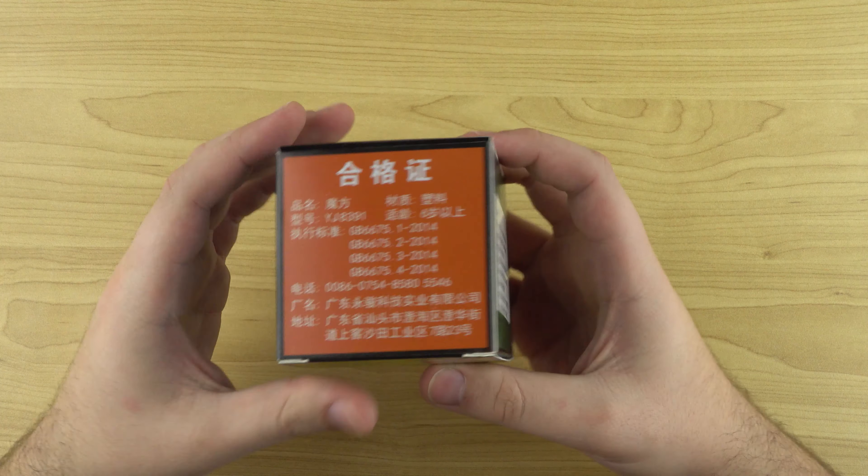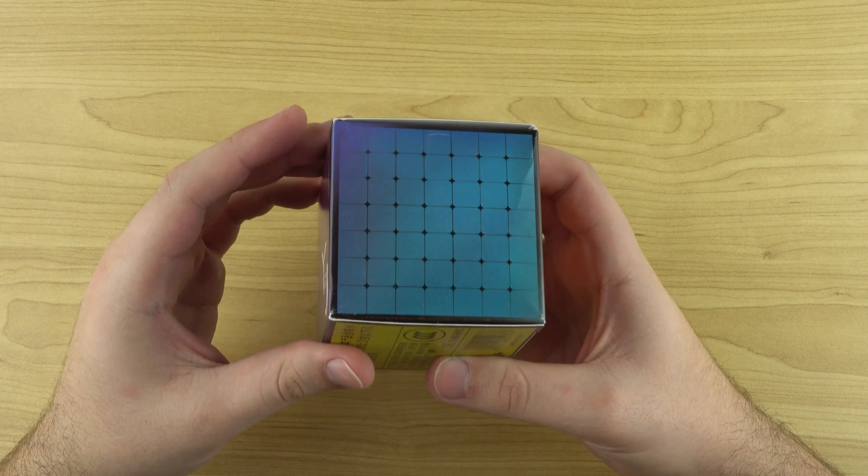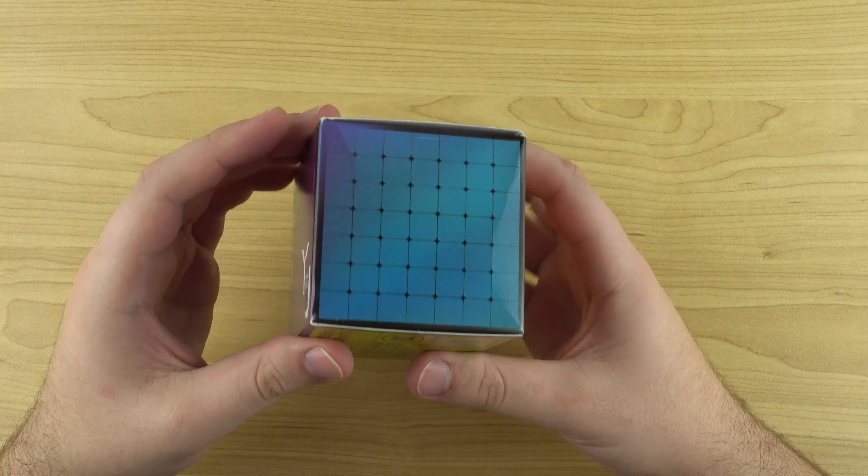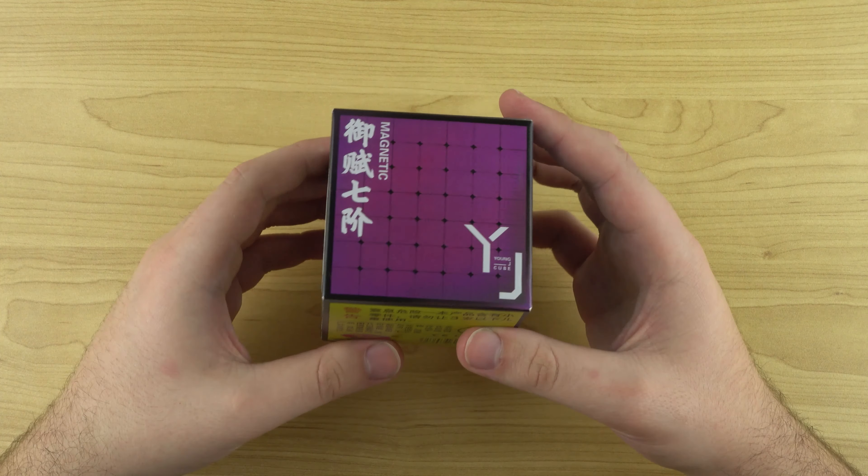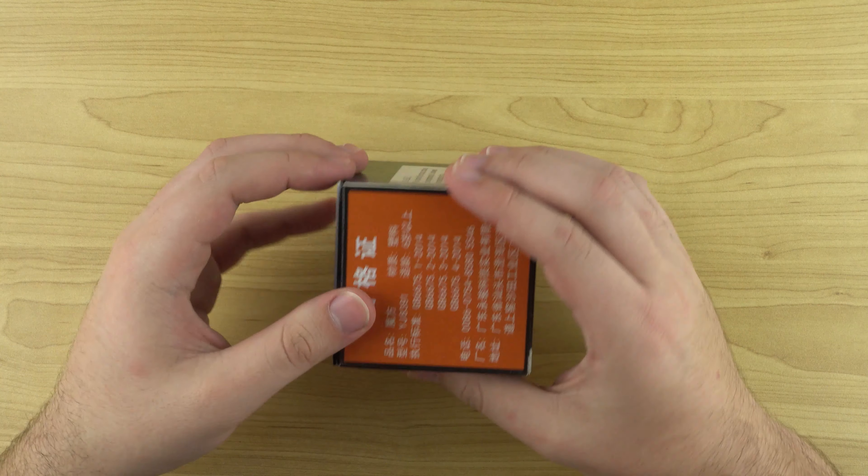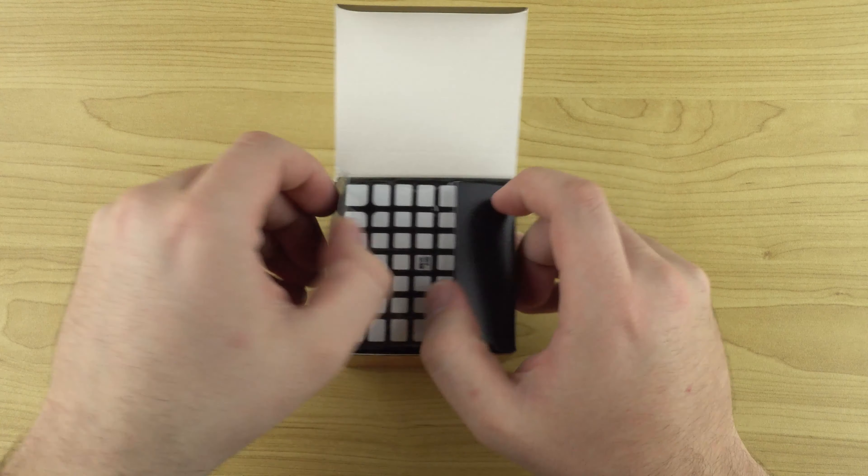So it's got a really cool box, sort of a metallic shine to it. Not sure how well it's picking up on camera but very similar to the rest of the puzzles in their Yu line which is their new budget magnetic series.